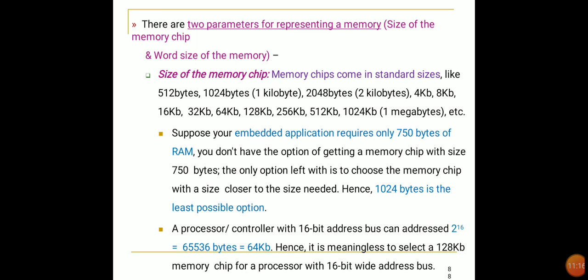A processor with a 16-bit address bus can address 2 to the power of 16, approximately 65,535 bytes — rounded to 64 KB. Therefore, it is meaningless to select a 128 KB memory chip for a processor with a 16-bit wide address bus.